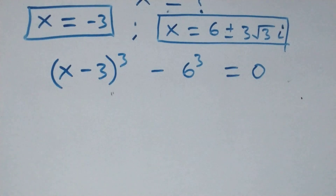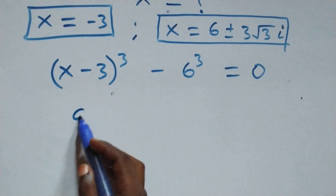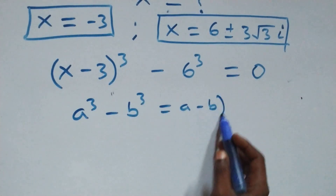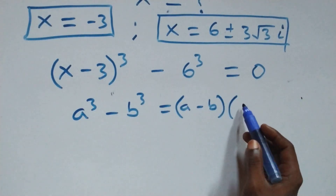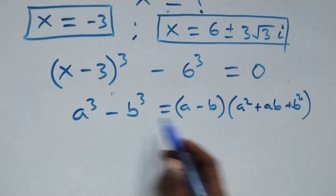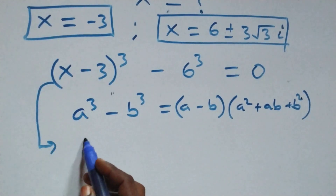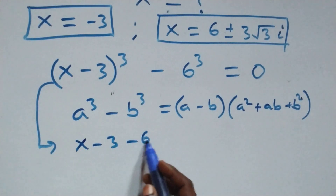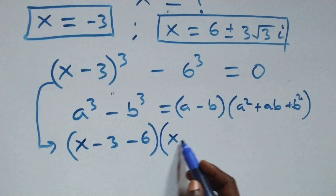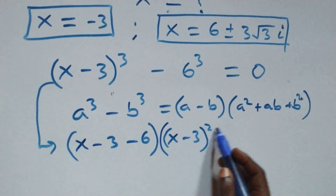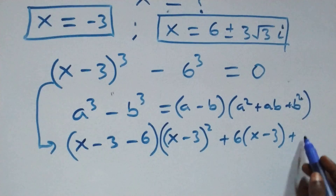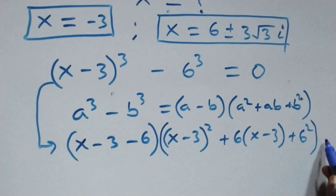Solving the second case: this follows from a cubed minus b cubed equals (a minus b) times (a squared plus ab plus b squared). Following this, it becomes (x minus 3 minus 6), times (x minus 3) squared plus 6 times (x minus 3) plus 6 squared, close brackets, equals to 0.